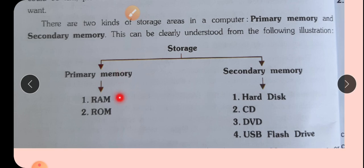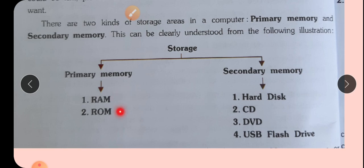Primary memory has RAM and ROM. RAM stands for Random Access Memory and ROM stands for Read Only Memory. So primary has two: RAM and ROM. Secondary has four: hard disk, CD, DVD, and USB flash drive.